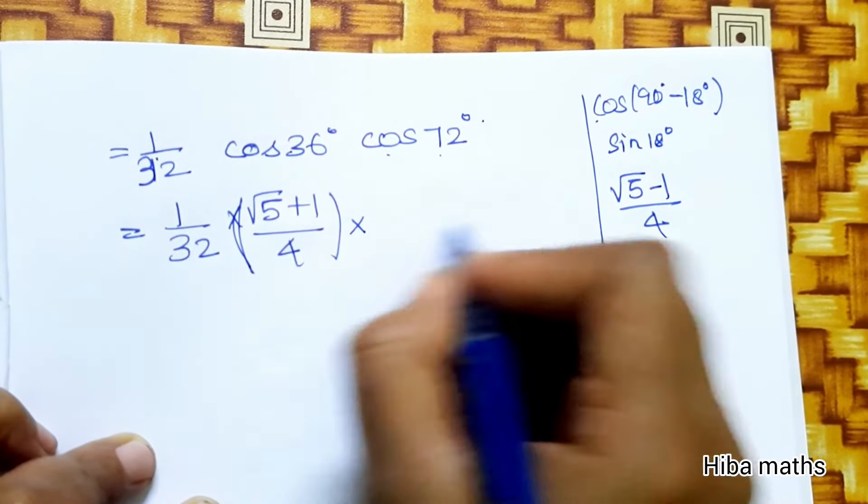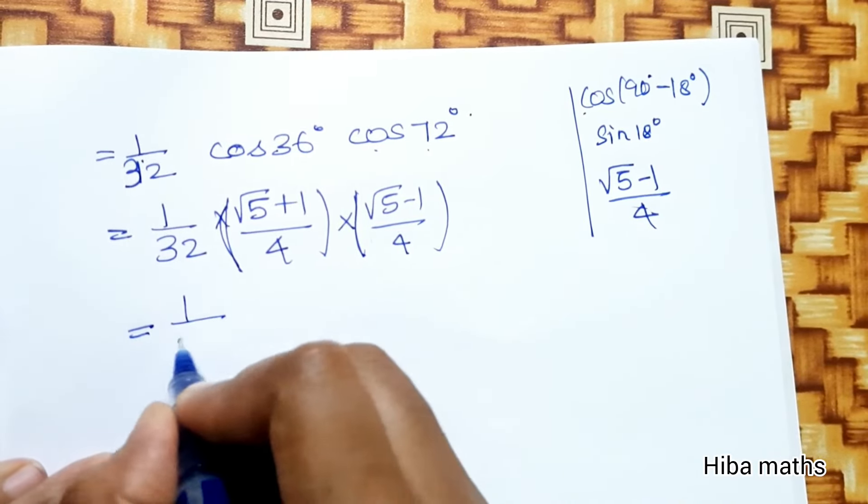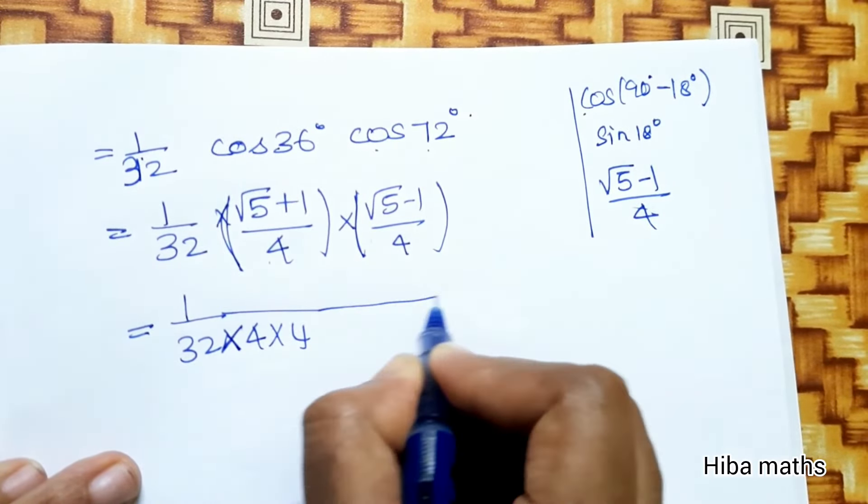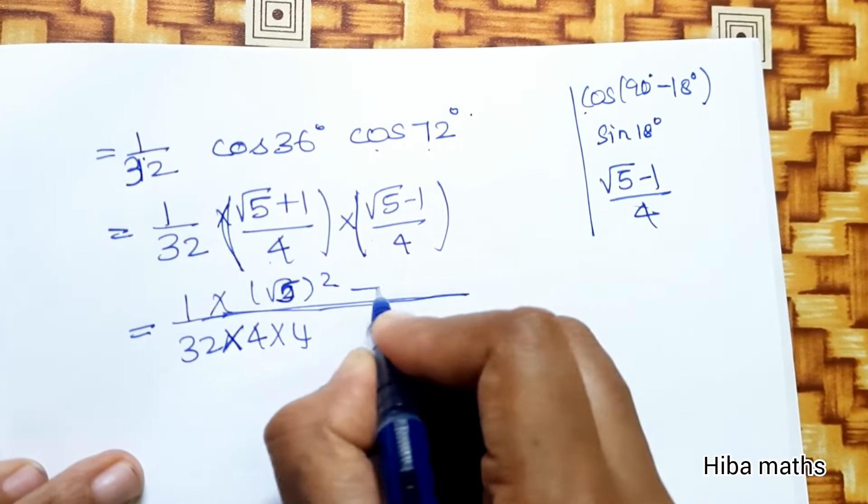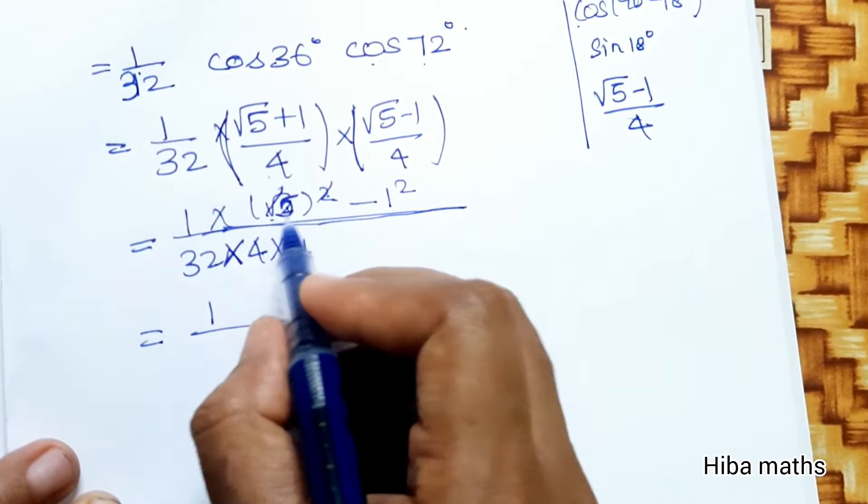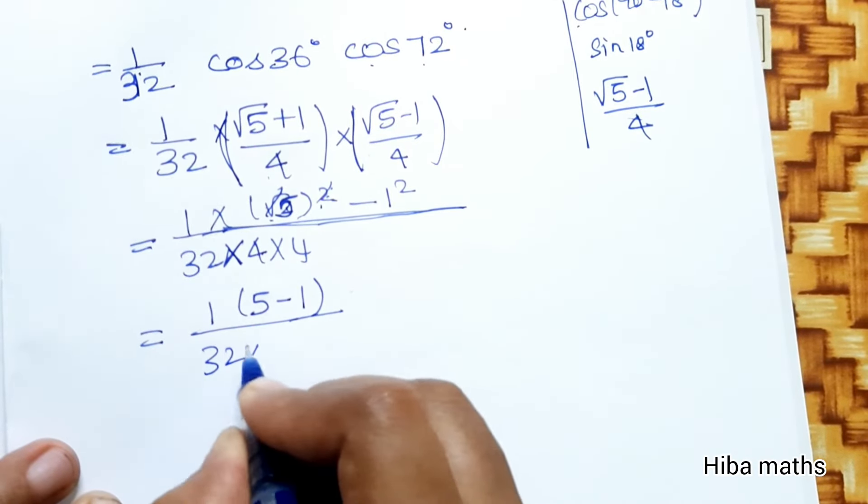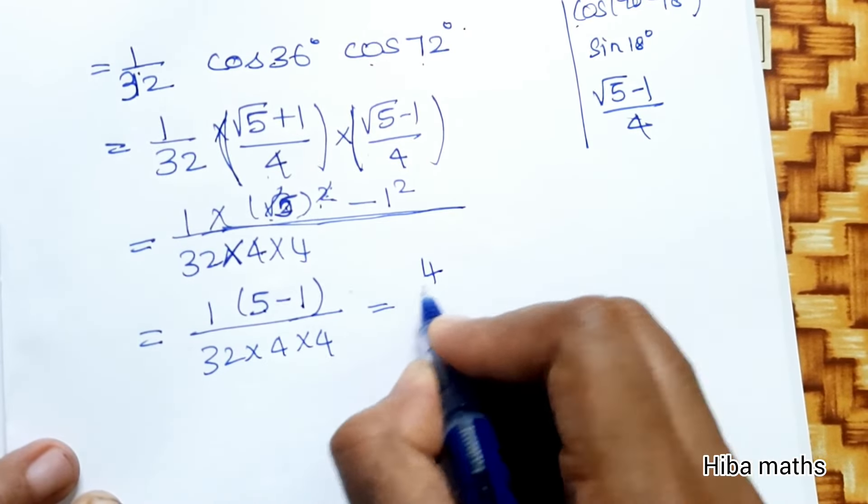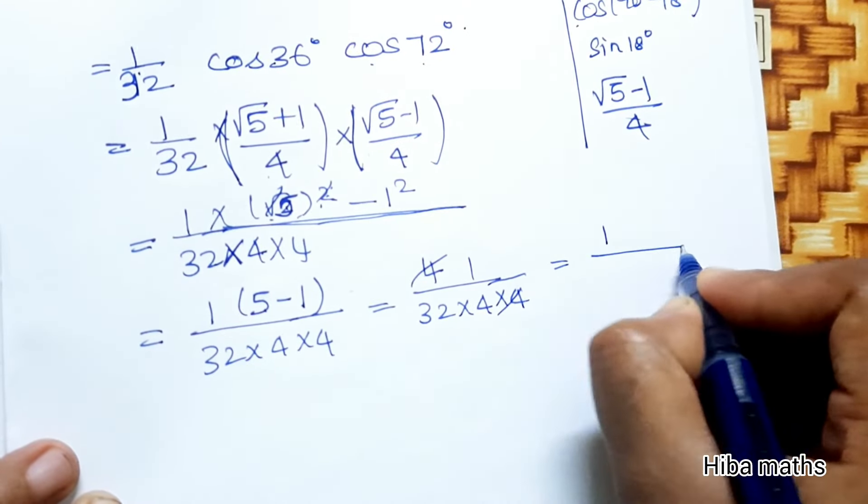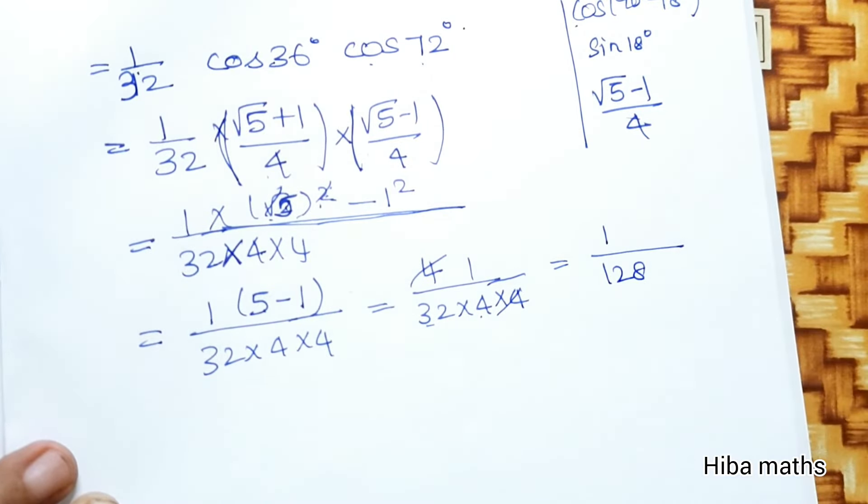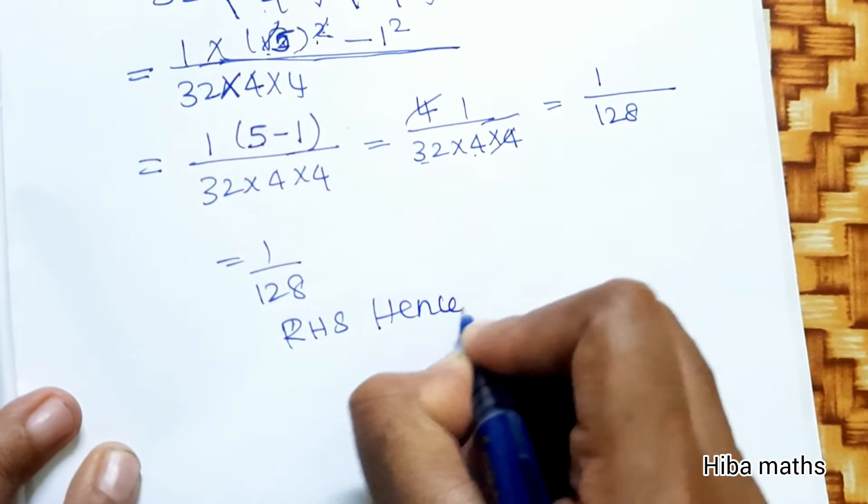Substituting these values: 1/32 × [(√5 + 1)/4] × [(√5 - 1)/4]. This is in the form (a + b)(a - b) = a² - b². So we get 1/32 × [5 - 1]/16 = 1/32 × 4/16 = 1/32 × 1/4 = 1/128.